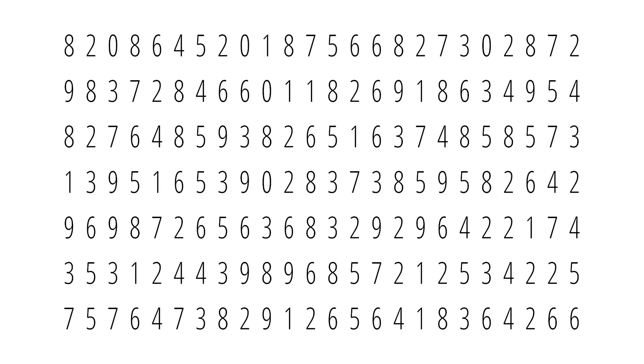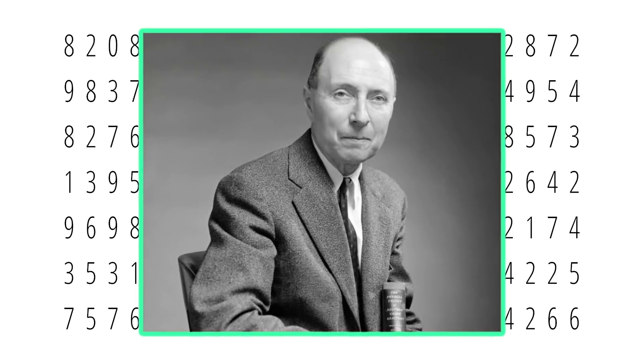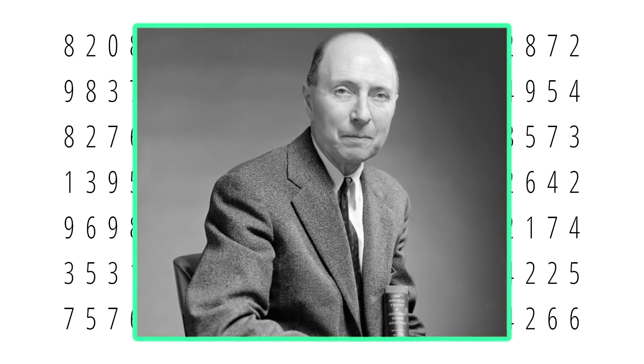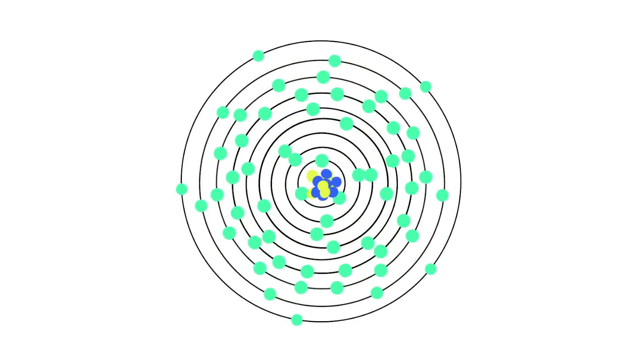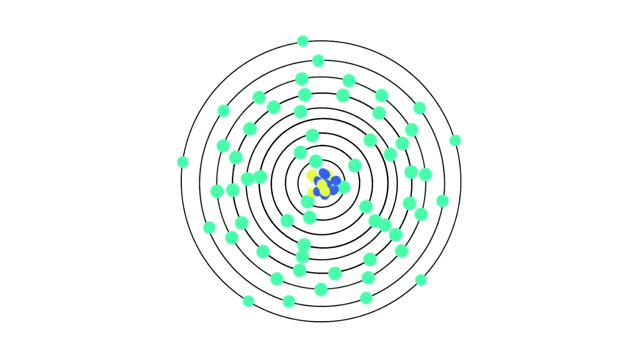The idea of random matrix universality goes back to Eugene Wigner, a Nobel Prize-winning theoretical physicist who worked on the Manhattan Project. Wigner was attempting to calculate the energy levels of a uranium nucleus, which has more than 200 protons and neutrons that can arrange themselves in all different configurations.